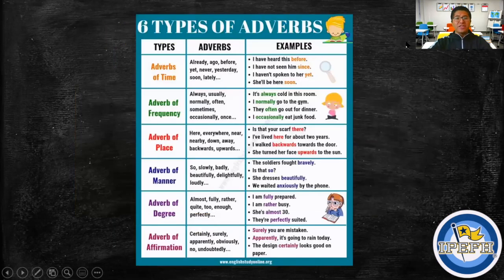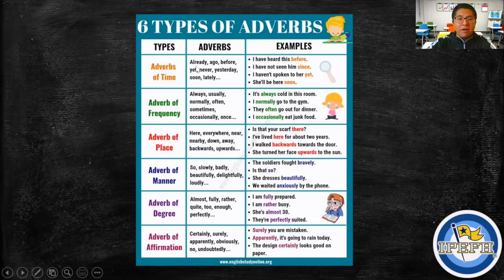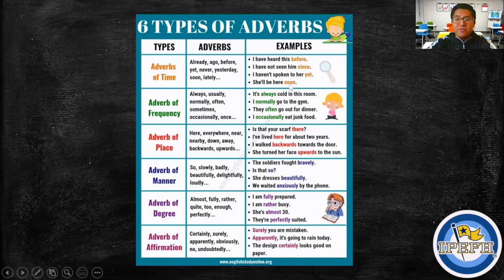Here we have a chart showing six types of adverbs. First, adverbs of time — examples include: already, ago, before, yet, never, yesterday, soon, lately. Example sentences: 'I have heard this before,' 'I have not seen him since,' 'I haven't spoken to her yet,' 'She'll be here soon.'